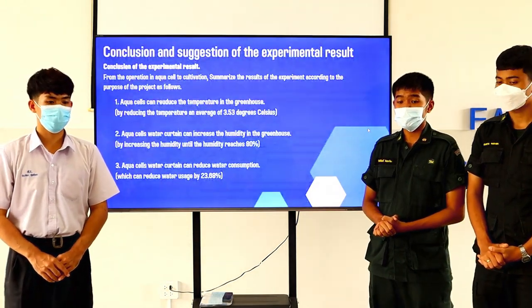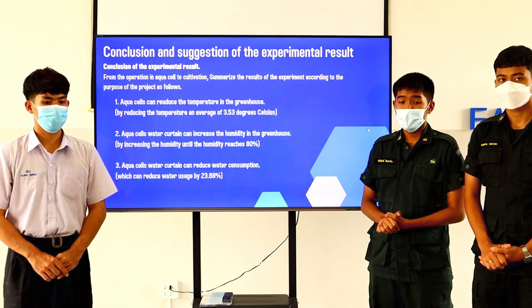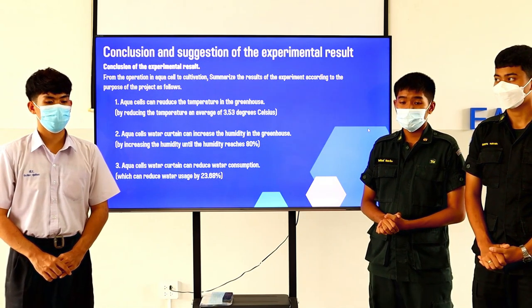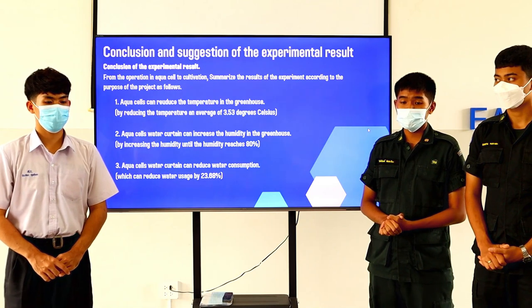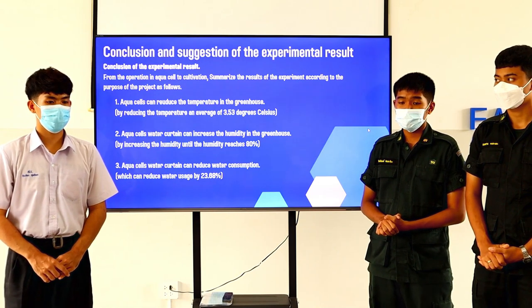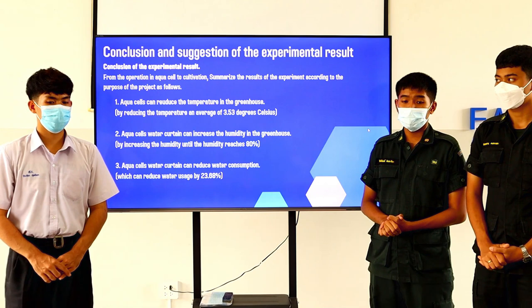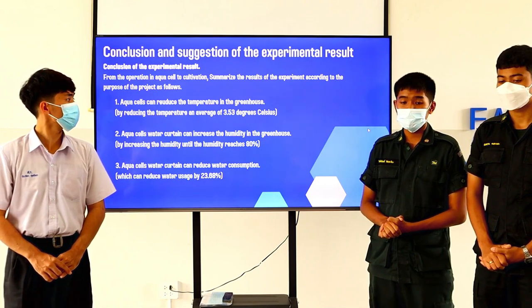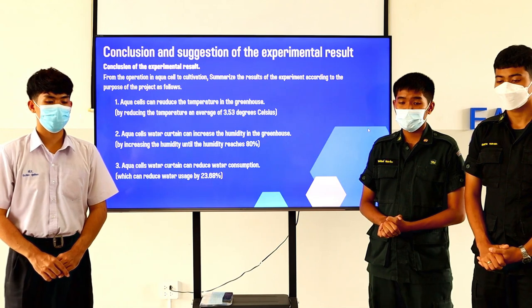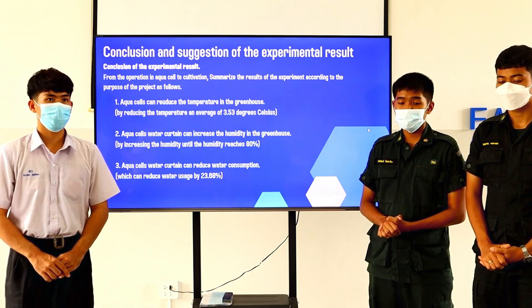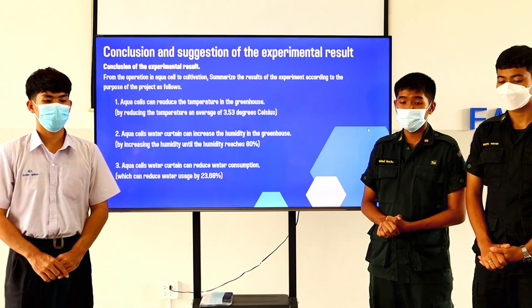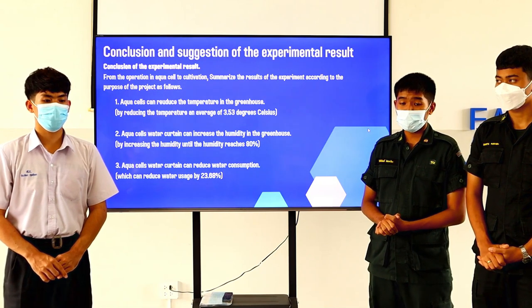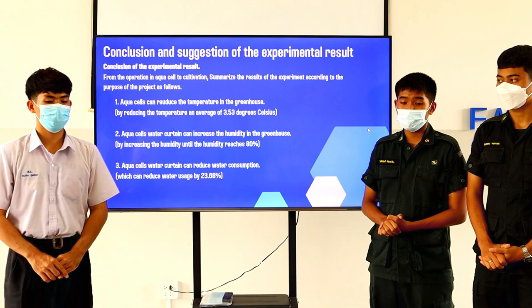Conclusion and suggestions: For the operation of aqua cell in cultivation, the results summarize as follows. First, aqua cell can reduce the temperature in the greenhouse. Second, aqua cell water curtain can increase the humidity in the greenhouse. And last, aqua cell water curtain can reduce water consumption.